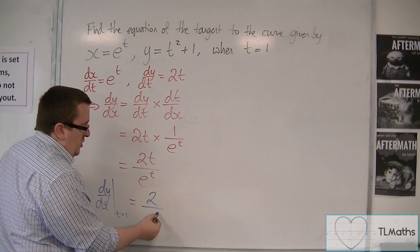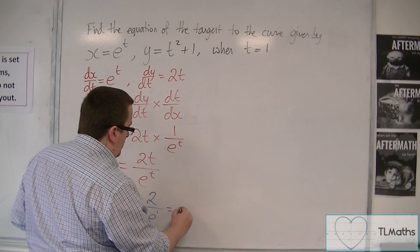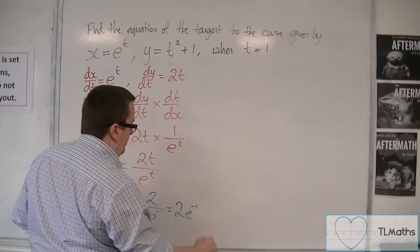So you could either write that as 2 over e to the 1, or 2 over e. It doesn't matter. I'm going to write it as 2e to the minus 1.